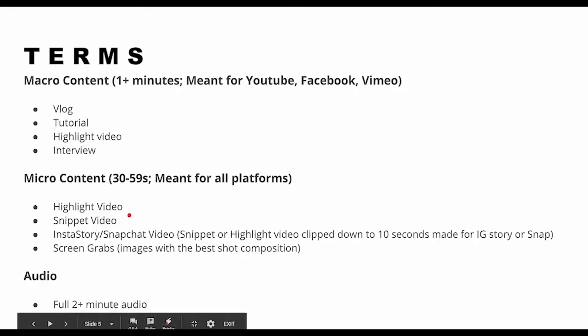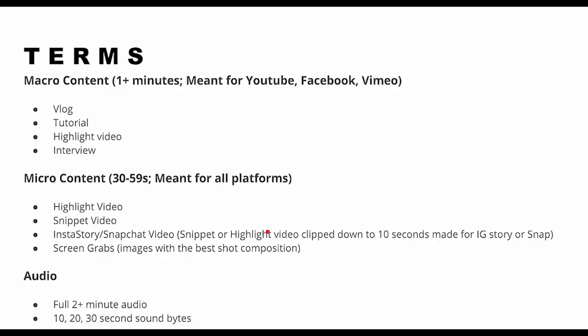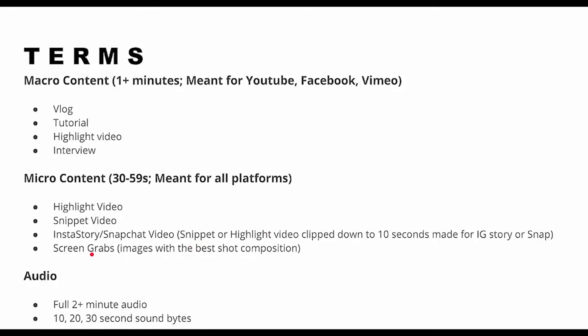Content types include a highlight video, snippet video — I'll tell you the difference as we go deeper into training — and Insta story or Snapchat video, which is either of these snipped down to 10 seconds for Instagram stories or Snapchat. And screen grabs, which is pretty much getting images with the best shot composition from that video. That's why I prefer doing video, because at any moment you're not only capturing the audio, you're capturing the video — and if you have a really good photographic eye, you can capture a powerful moment that becomes an image you can share on Instagram or use as an ad.